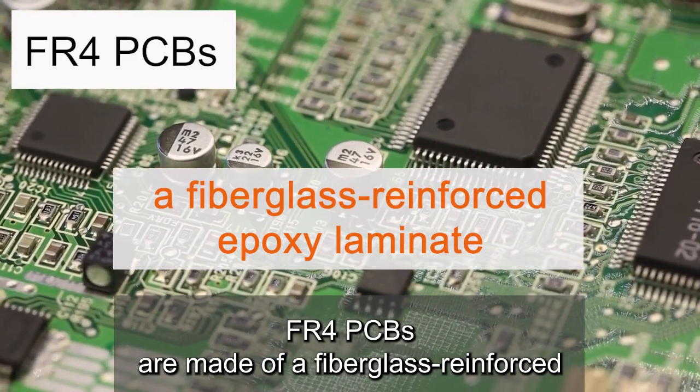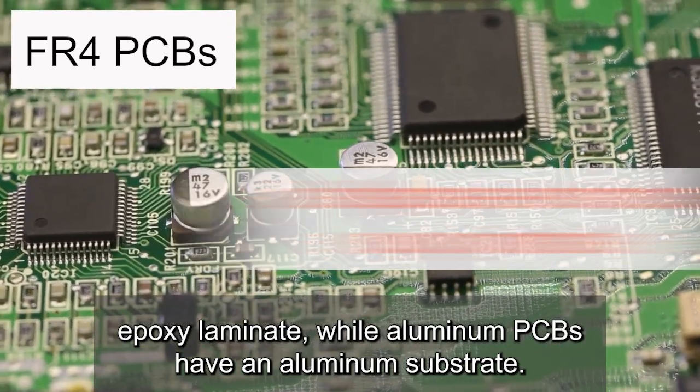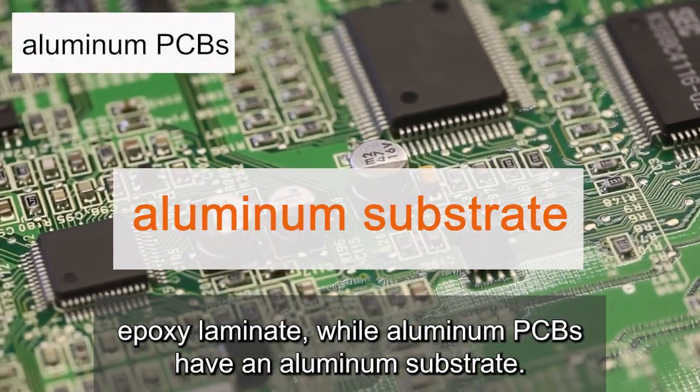FR4 PCBs are made of a fiberglass-reinforced epoxy laminate, while aluminum PCBs have an aluminum substrate.